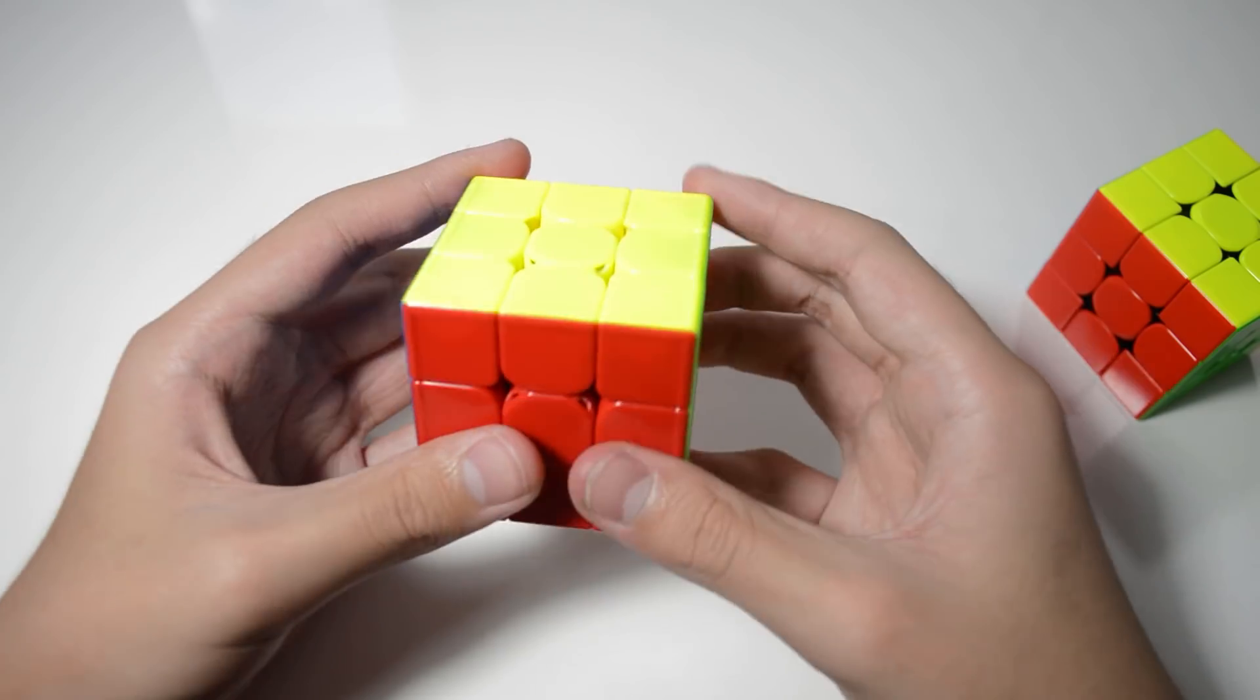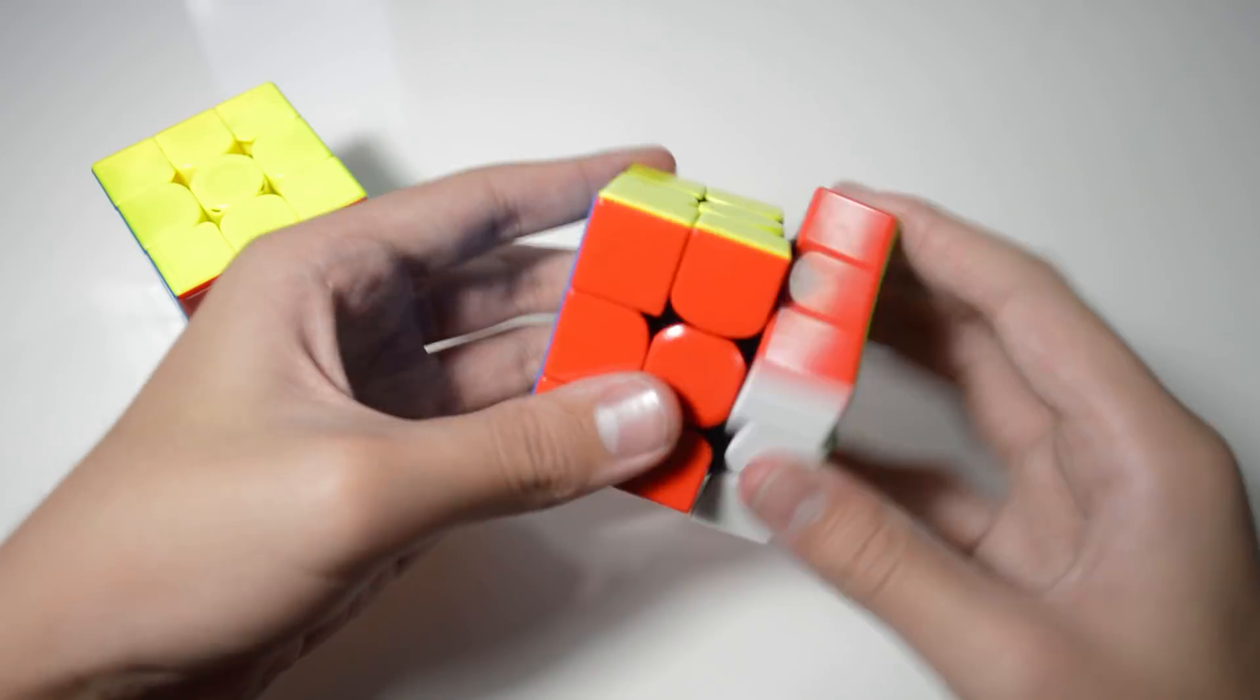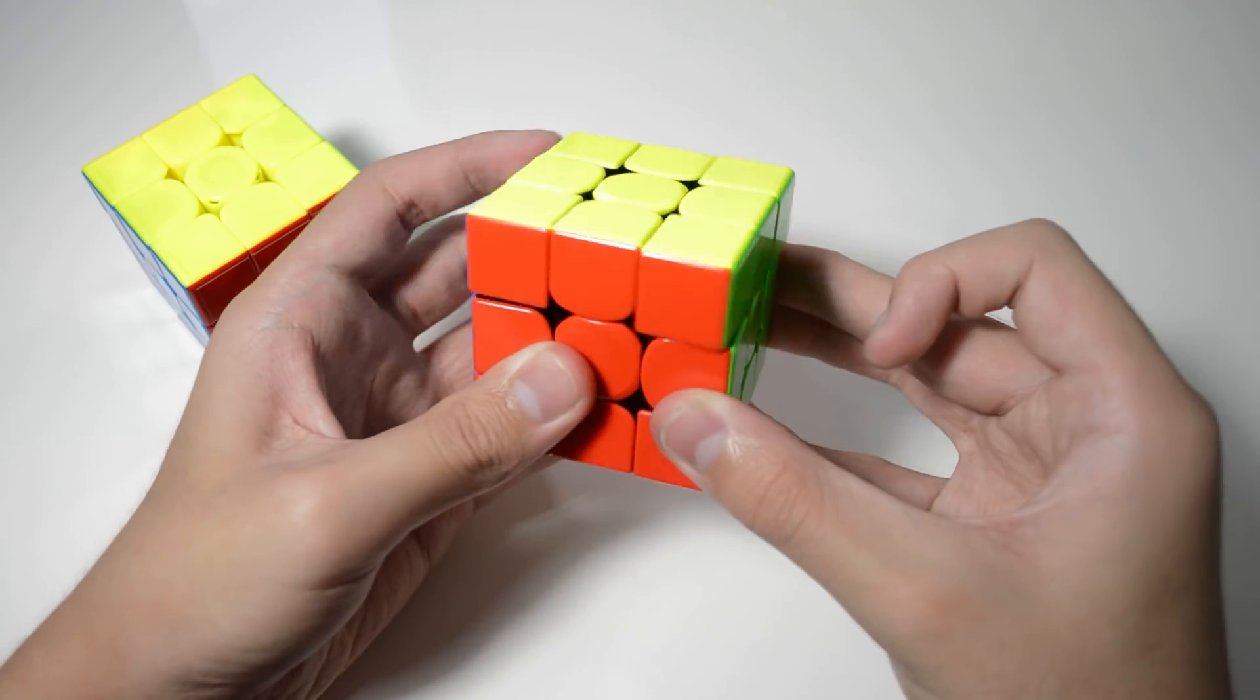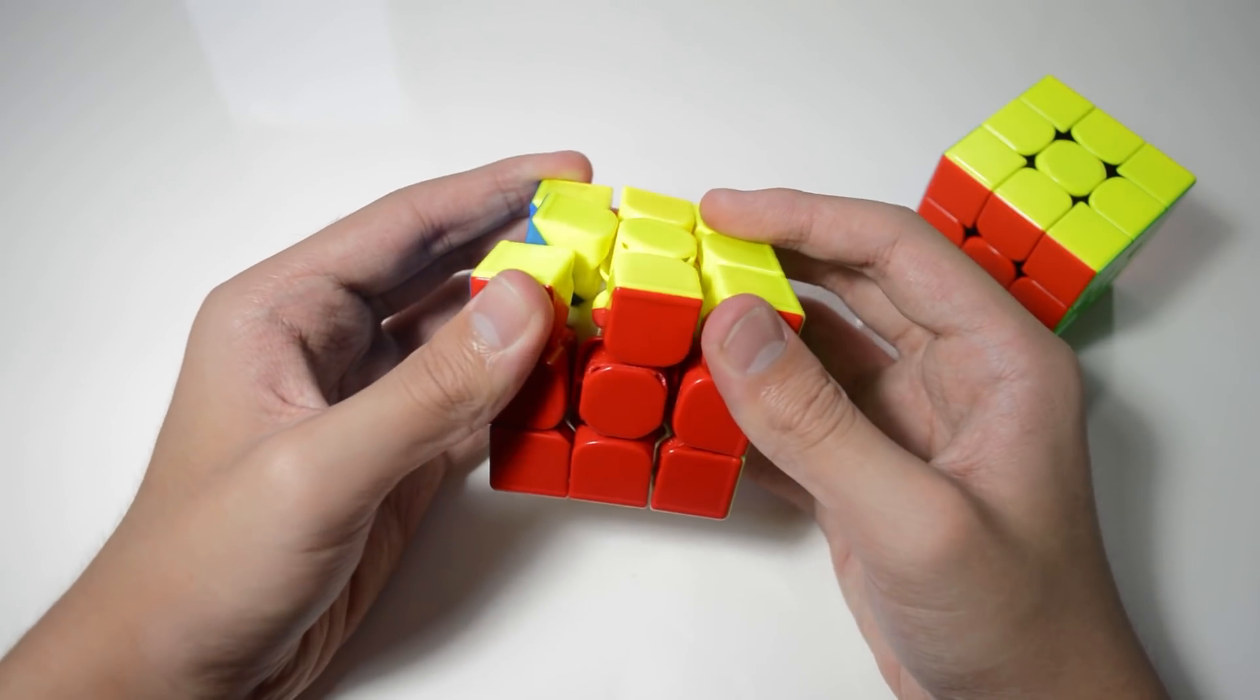Now are both of these cubes stable? Yes. Can both cubes corner cut 45 degrees and have good reverse corner cutting? Yes. It's 2018. Do both cubes pop? If you put them on super loose tensions then yes.